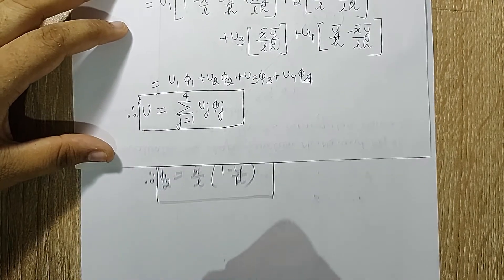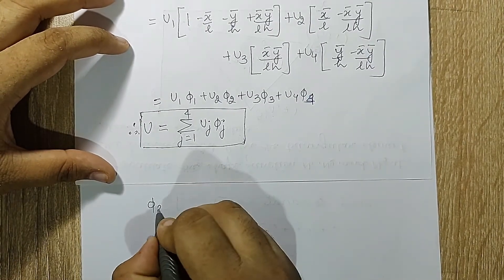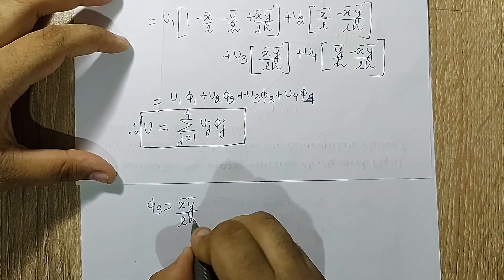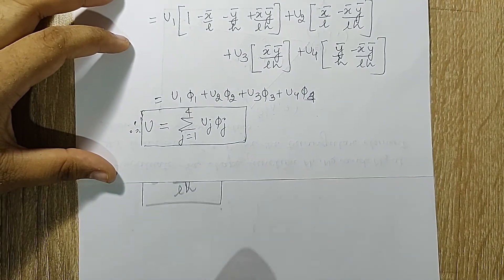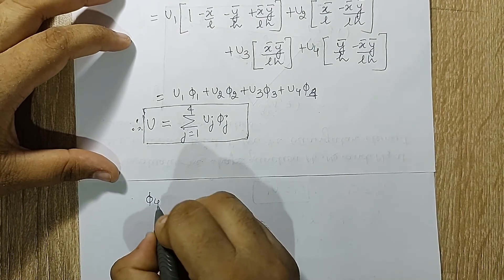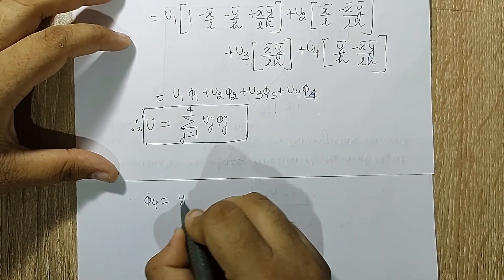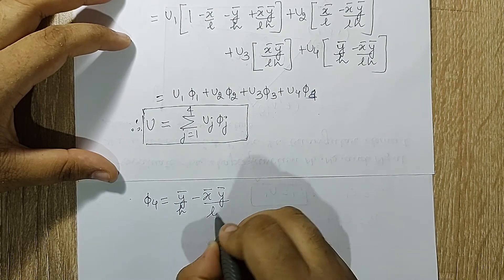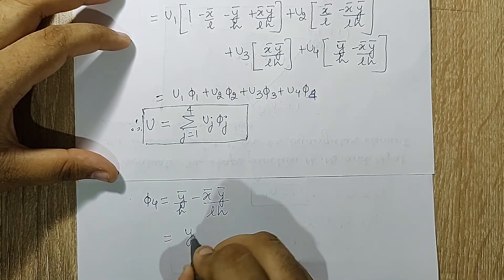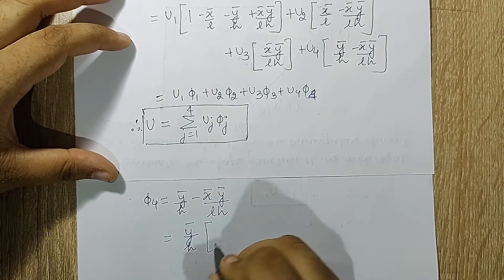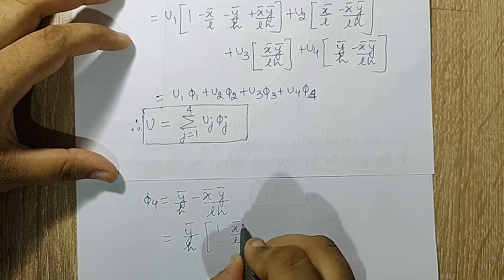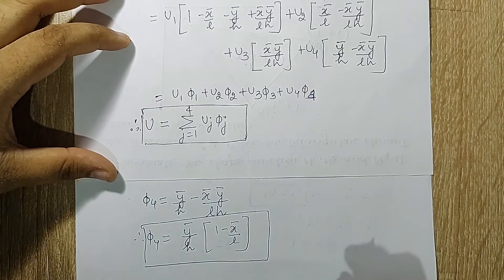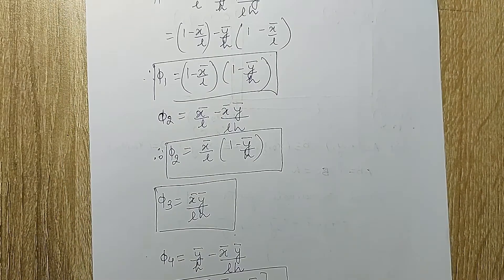For a rectangular element, φ3 = x̄ȳ/(l*h) directly, no modification needed. For φ4 = ȳ/h - x̄ȳ/(l*h), taking ȳ/h common gives φ4 = (ȳ/h)(1 - x̄/l). So φ1, φ2, φ3, φ4 are the shape functions for a rectangular element with four nodes at the vertices.